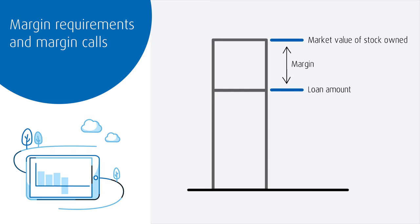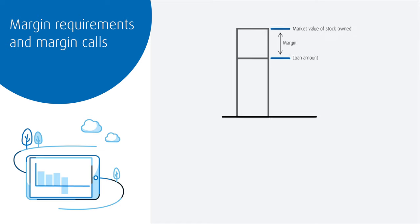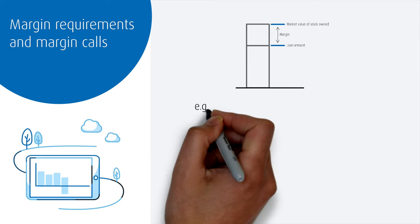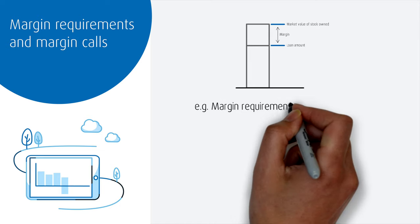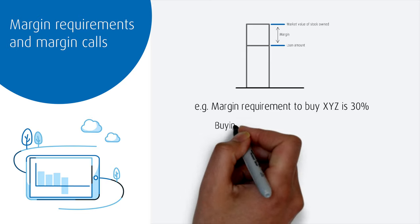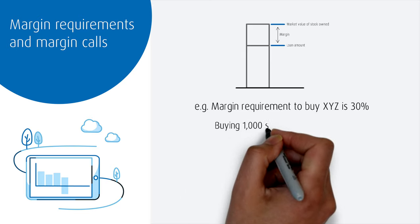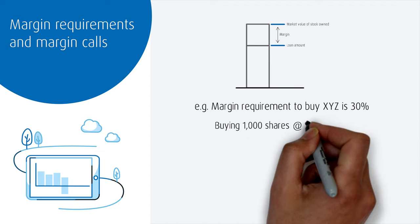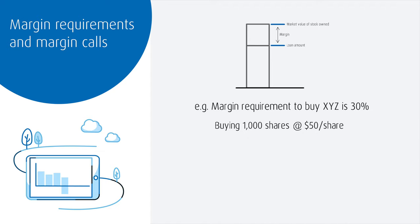Different securities have different margin requirements. So if the margin requirement for buying stock XYZ is 30%, here's how you would calculate the margin required to buy 1,000 shares of stock XYZ if it's priced at $50 per share.